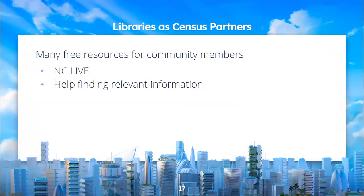Libraries as census partners: there are many free resources for community members. NC Live is a really great resource — if you have a public library card, you can access it, and there are all kinds of resources including databases that you'd typically find at an academic library, which are often expensive and not accessible to the general public. Libraries are also great at helping find relevant information.